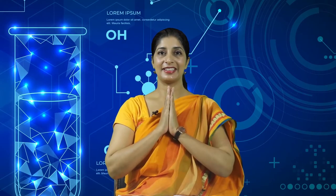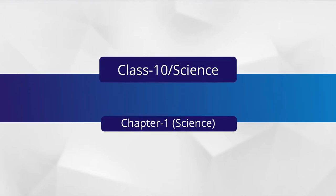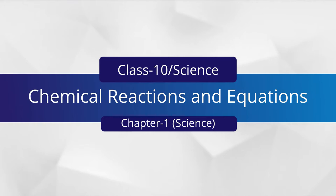Dear students, namaskar! I hope you are all well and in sound health. Today we are going to talk about Chapter 1 of Science for Class 10: Chemical Reactions and Equations. We will cover chemical equations, different types of chemical reactions, and then discuss corrosion and rancidity.